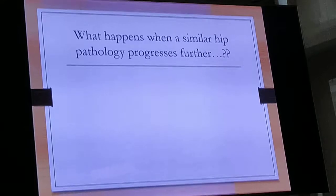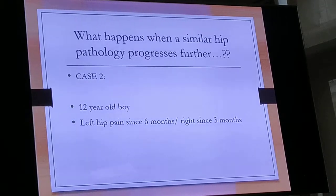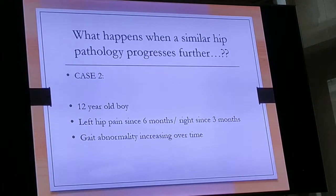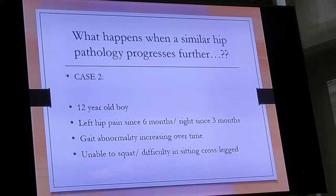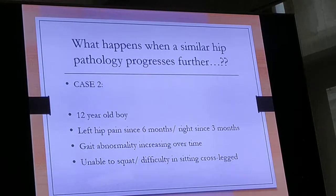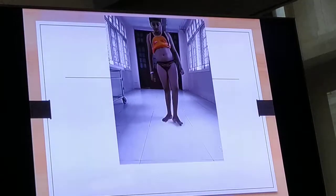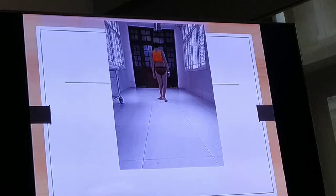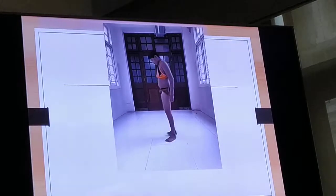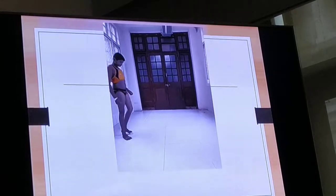What happens when a similar hip pathology progresses further? This is a second case — a 12-year-old boy with left hip pain since 6 months and right hip pain since 3 months. The gait abnormality has been increasing over time. He is unable to squat and has significant difficulty sitting cross-legged, causing significant issues with activities of daily living. He walks with significant bilateral out-toeing, has a significant Trendelenburg gait, and hip flexion is significantly restricted when viewed from the side.